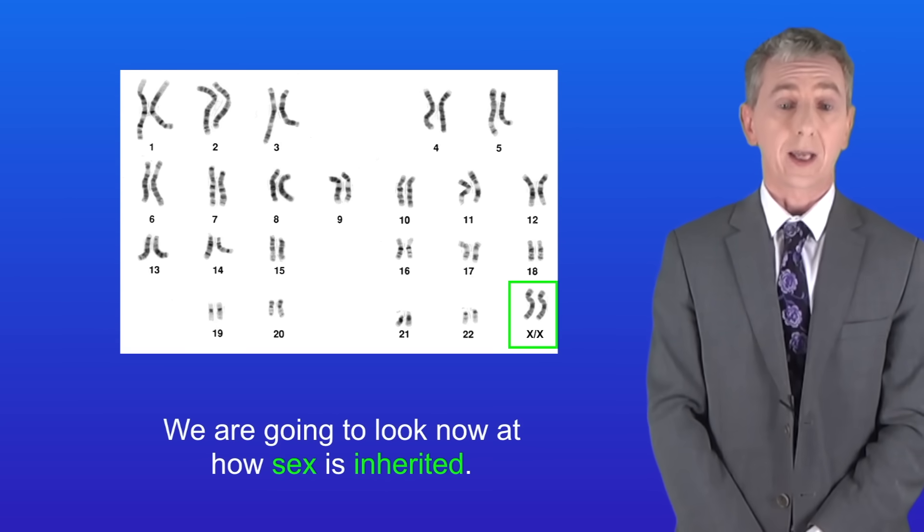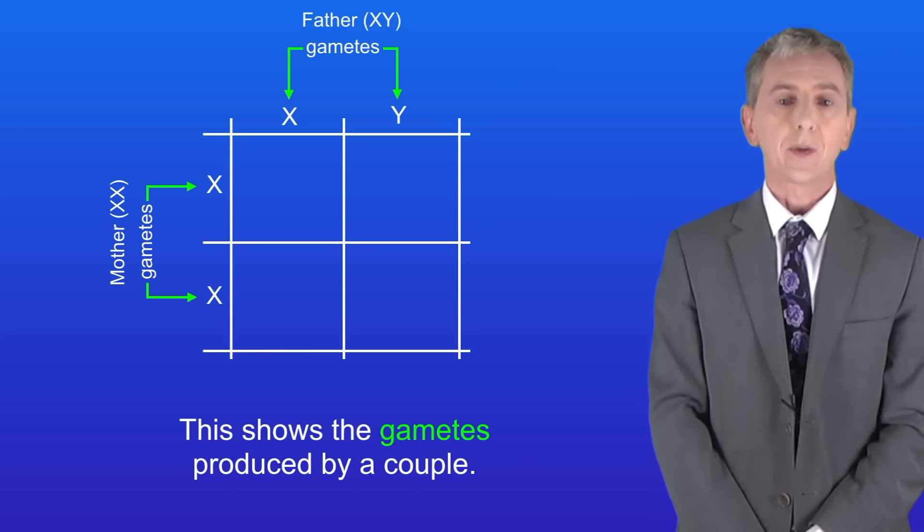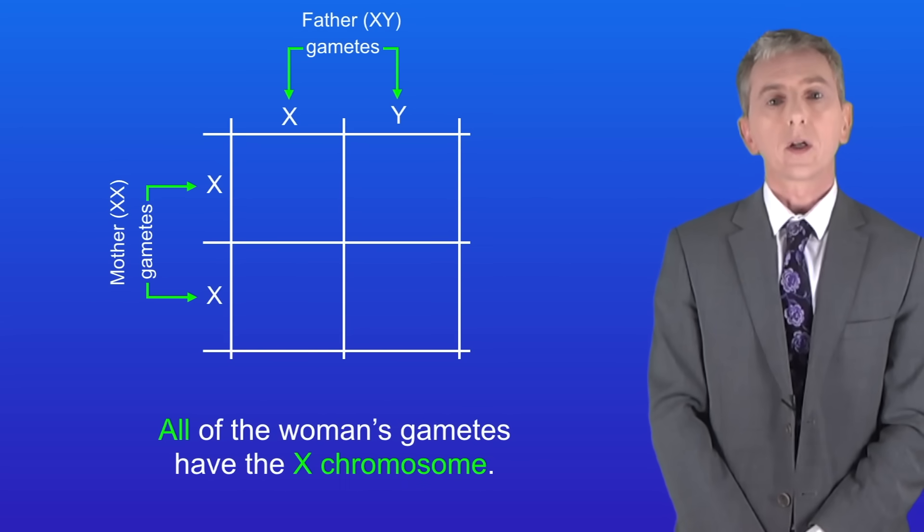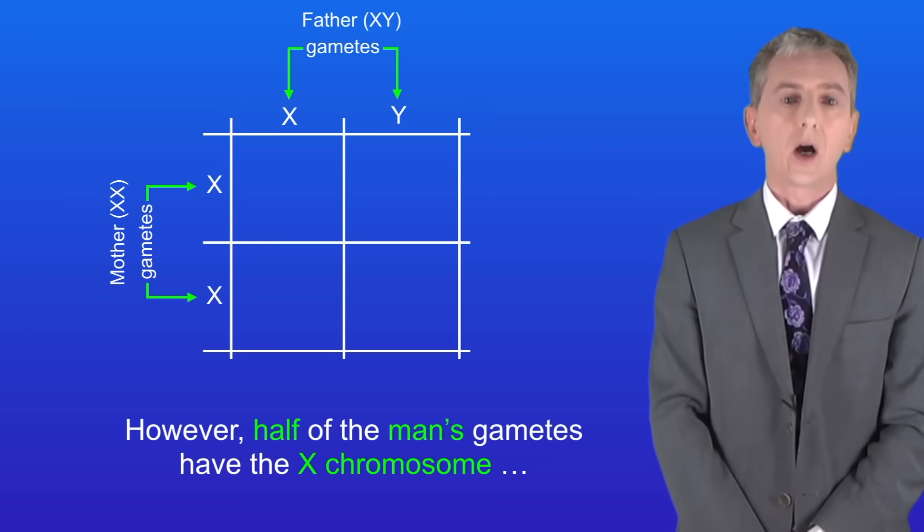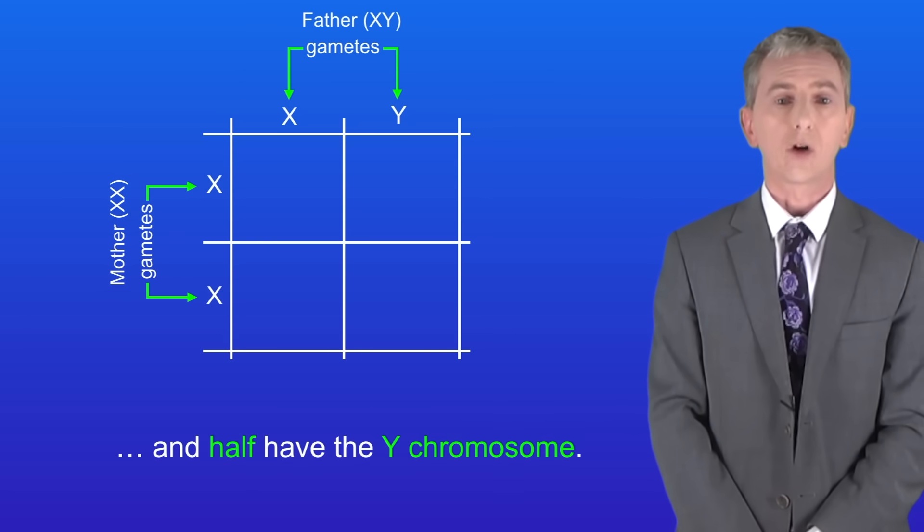Okay we're going to look now at how sex is inherited. I'm showing you here the gametes produced by a couple. You'll notice that all of the woman's gametes have the X chromosome. However half of the man's gametes have the X chromosome and half have the Y chromosome.